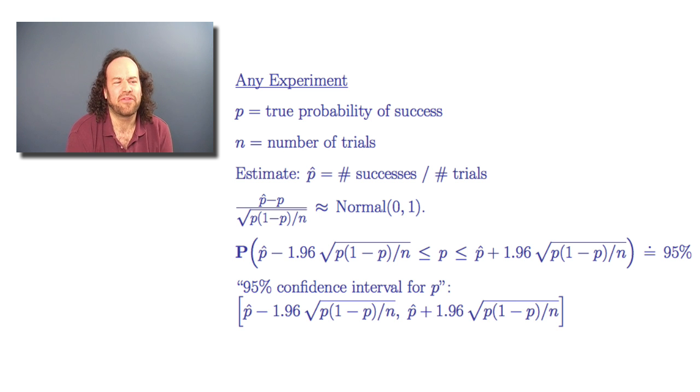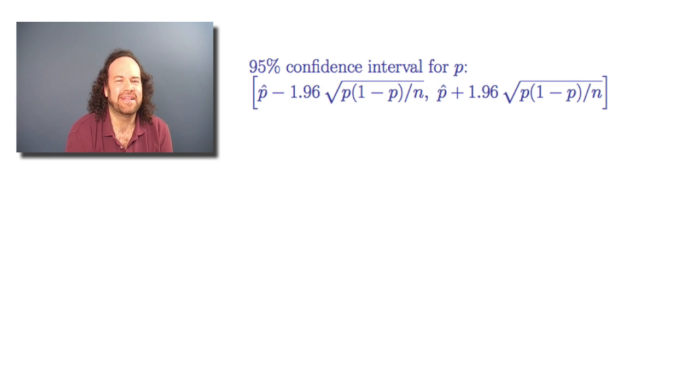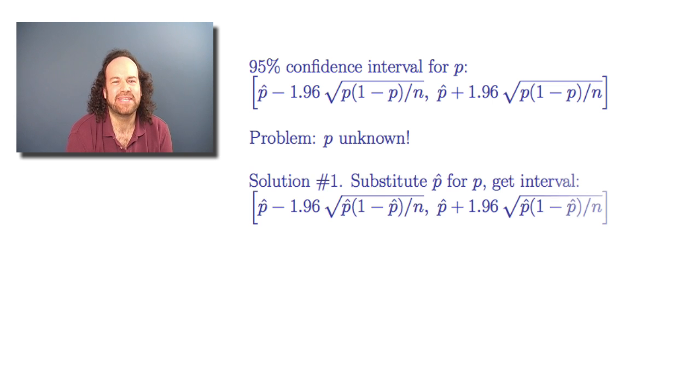There's a few other things we can say here. One is you might think this isn't that useful because after all the confidence interval has p in it, but p was unknown. Well, there's two ways to proceed there. One is we could say, p is probably pretty close to p-hat, so let's just kind of substitute in p-hat instead of p. That's often done.